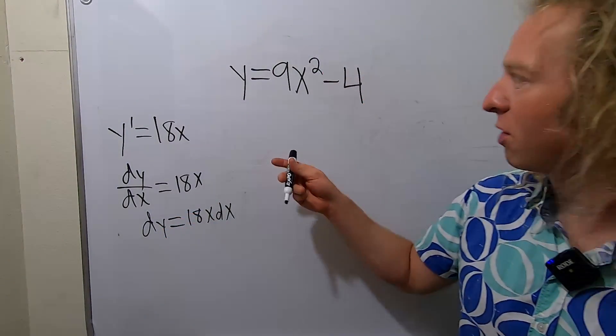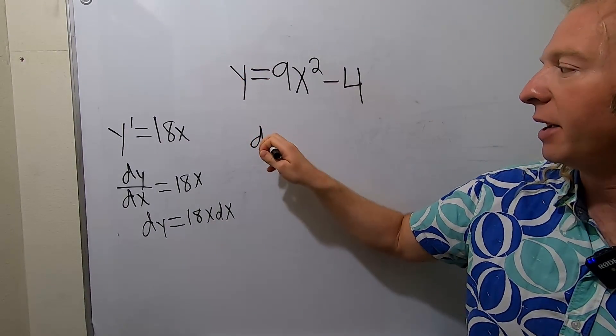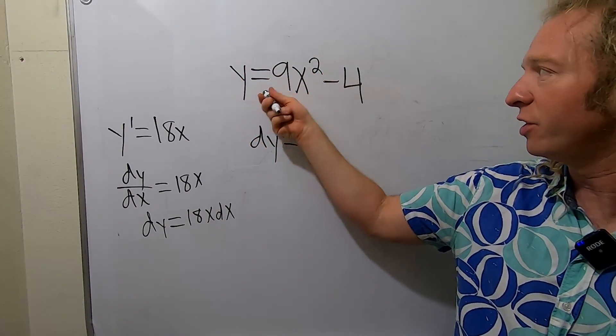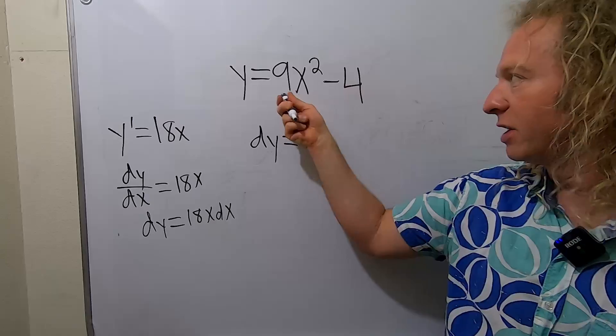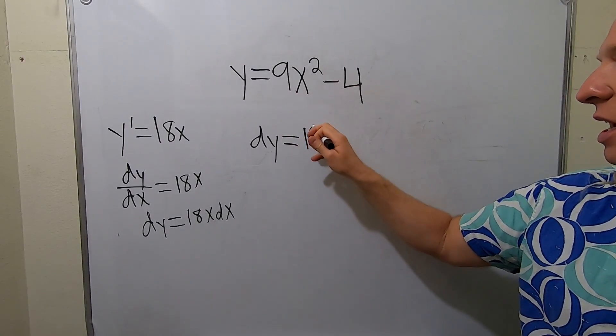So how do you do it? Well, all you really do in this problem is you take the derivative of y and you put dy, and then you take the derivative here—so you just get 2 times 9 is 18, 18x—and then you just put a dx, and that's all you do.